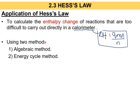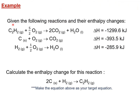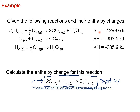There are two methods to apply Hess Law. The first one is the algebraic method, which is a bit easier. The second is the energy cycle method. Given the following reactions and their enthalpy changes, the question asks you to calculate the enthalpy change for a target reaction. You can label the given chemical equations as enthalpy change 1, enthalpy change 2, and enthalpy change 3.